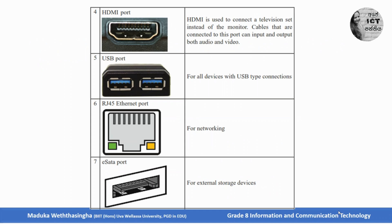Then USB port — you know about this port, it is for all devices with USB type connections. Then RJ45 Ethernet port — we use it for the internet connection, meaning for networking. Then eSATA port — eSATA port is used to connect external storage devices.